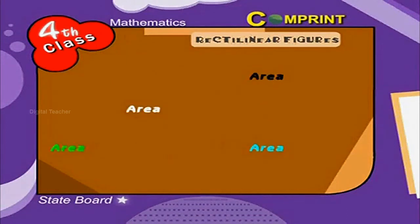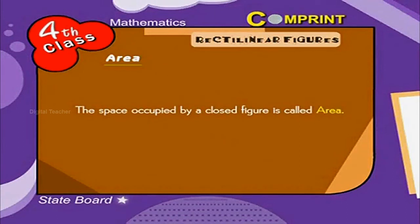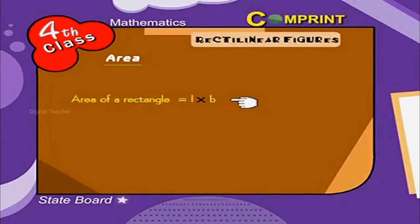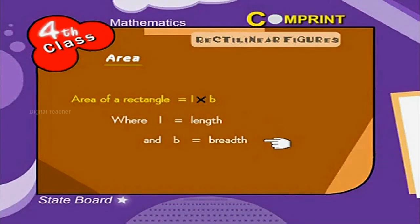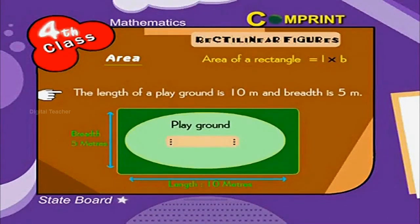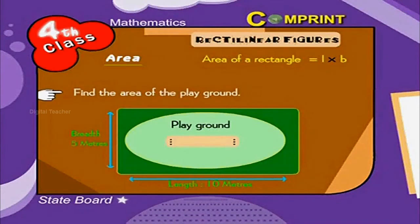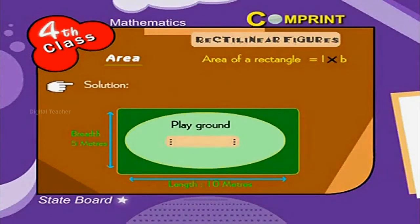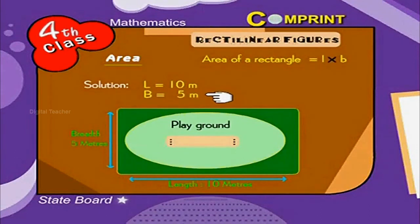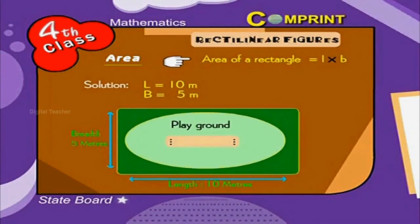Area. The space occupied by a closed figure is called area. The area of a rectangle is L into B, where L is equal to length and B is equal to breadth. For example, the length of a playground is 10 meters and breadth is 5 meters. Find the area of the playground. Solution: L is equal to 10 meters and B is equal to 5 meters. Area of rectangle is equal to L into B, that is 10 into 5 is equal to 50 square meters.